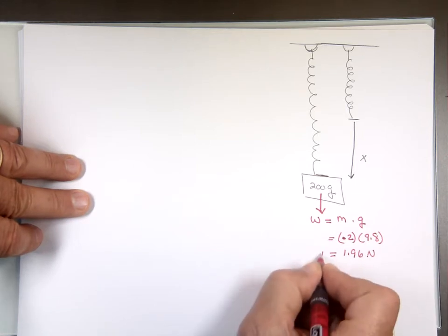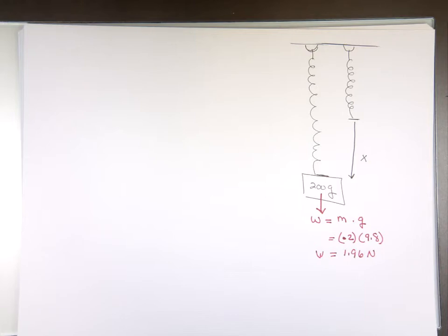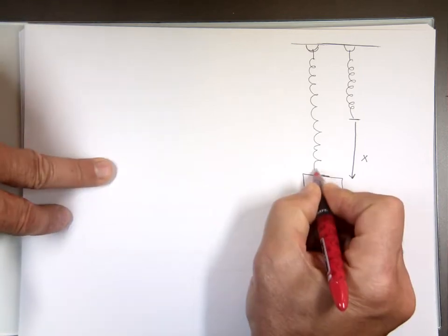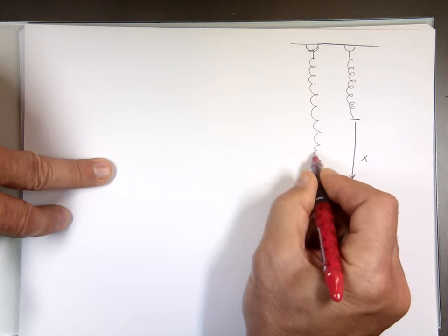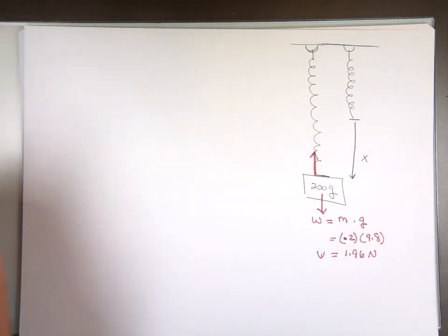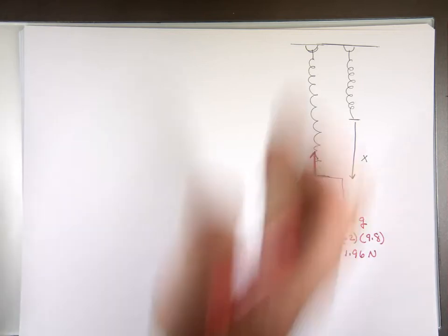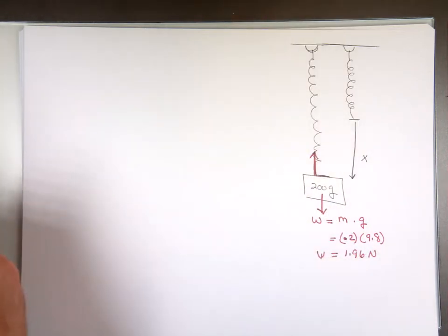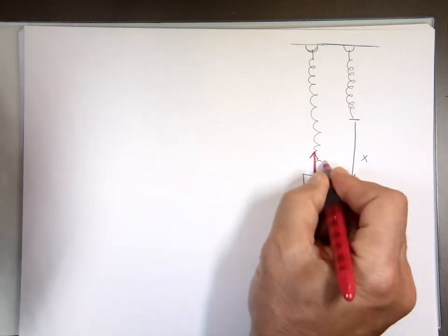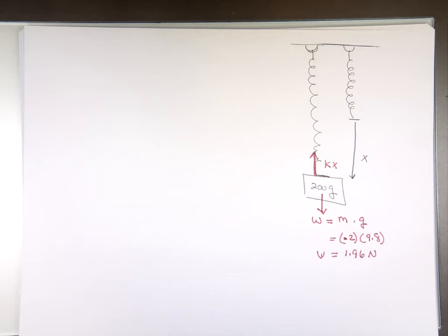1.96 Newtons. That's the weight. What else is pulling on that? Pulling upward. And how big is that force? We know the direction is upward. That's what the minus sign tells me. But what's the magnitude of that force? K times X.